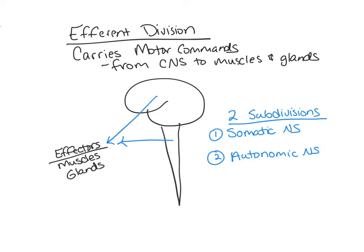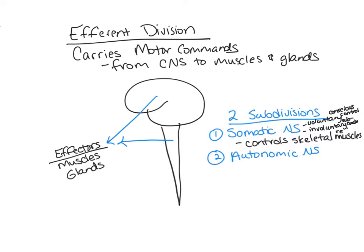The somatic nervous system is the branch of the efferent division that controls skeletal muscles. It can be voluntary or involuntary. When voluntary, contractions are under conscious control. When involuntary, contractions are simple or complex automatic responses directed at the subconscious level — for example, a reflex, which is an automatic response of the skeletal muscles.